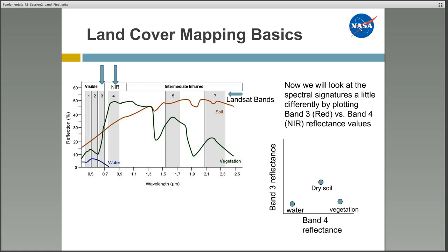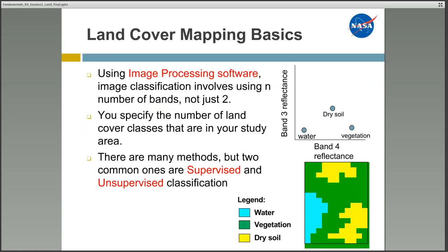Image processing software can be used to separate out different land cover types using this method. All pixels with similar reflectance characteristics to each land cover type will be labeled the same. Landsat imagery has more than just two bands, so the software uses any number of bands you choose, and you can specify the number of land cover classes in your study area. In this example there are only three classes — water, vegetation, and dry soil — but in reality there are many more. There are many ways of doing image classification, but two common ones are supervised and unsupervised classification. We will not go into detail here, but encourage you to read more about it or take an image processing class.